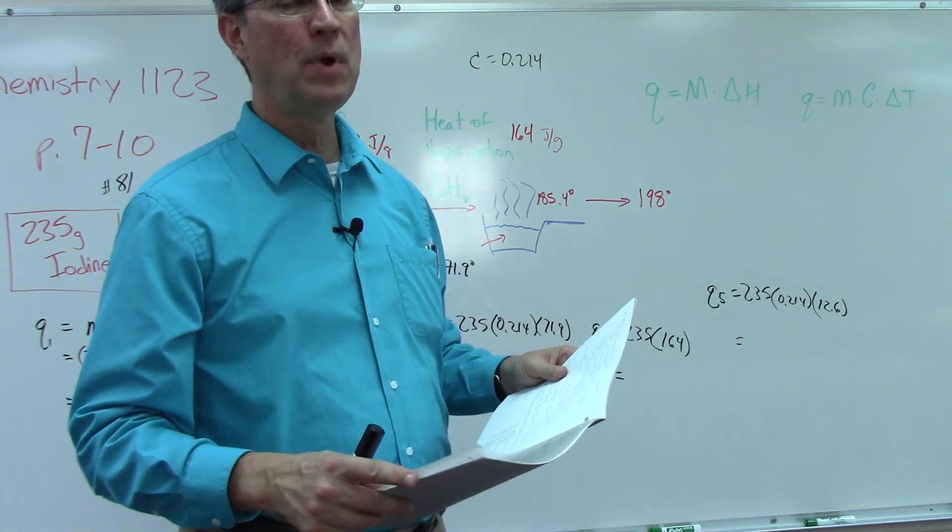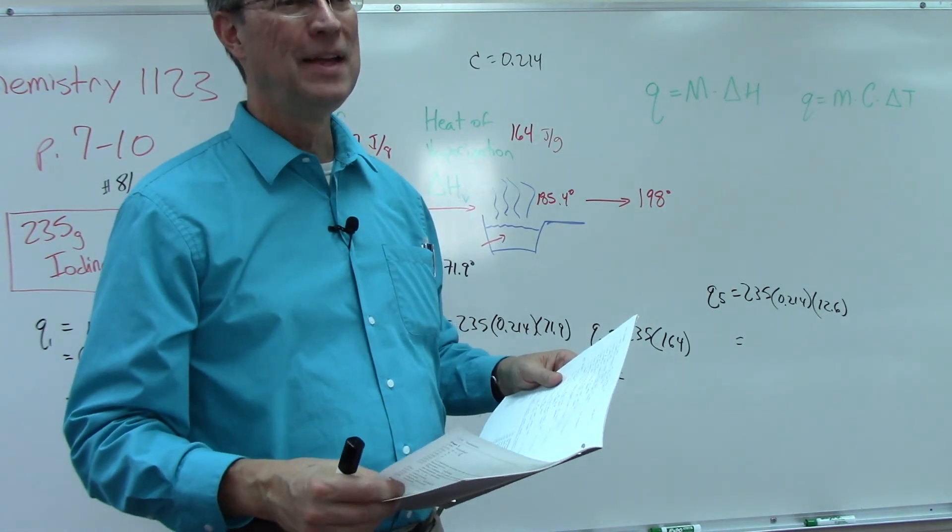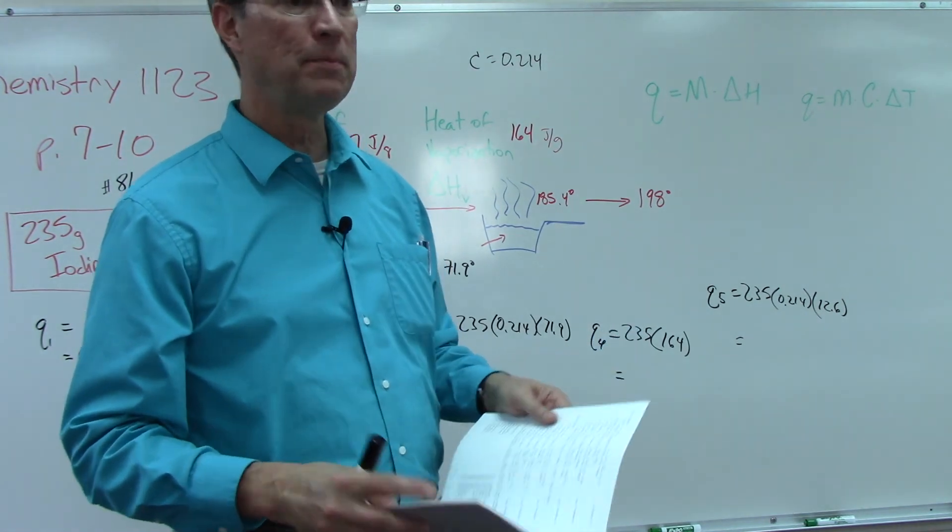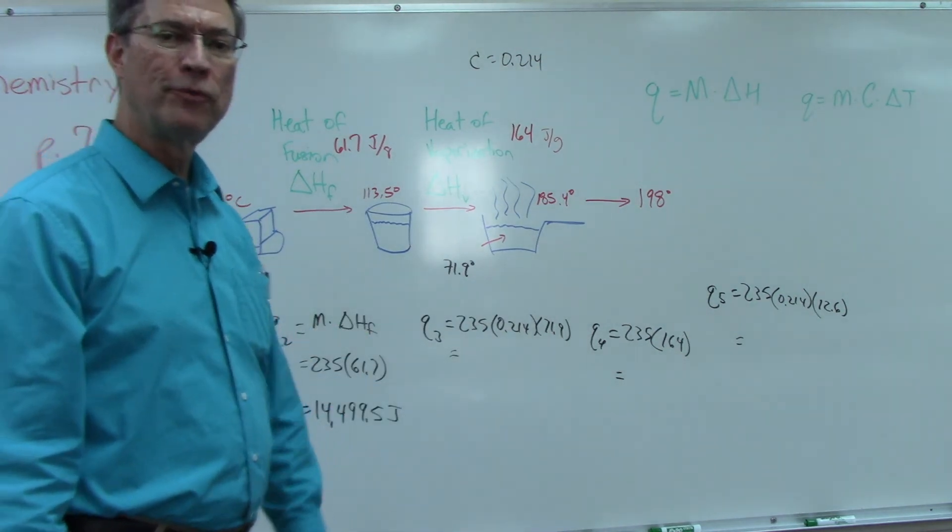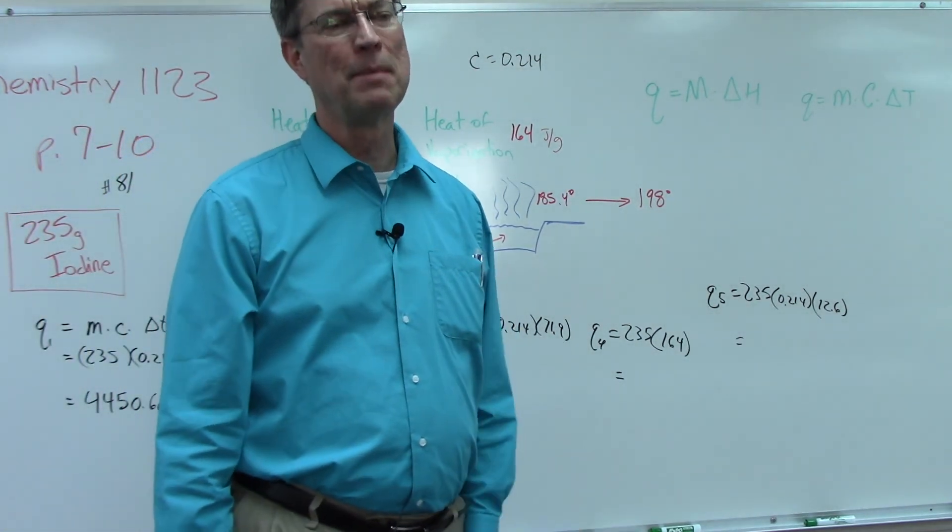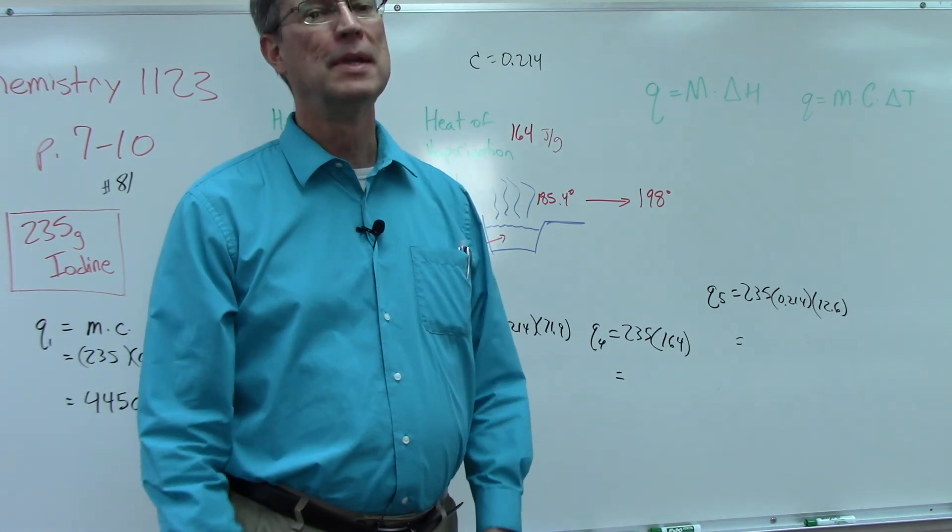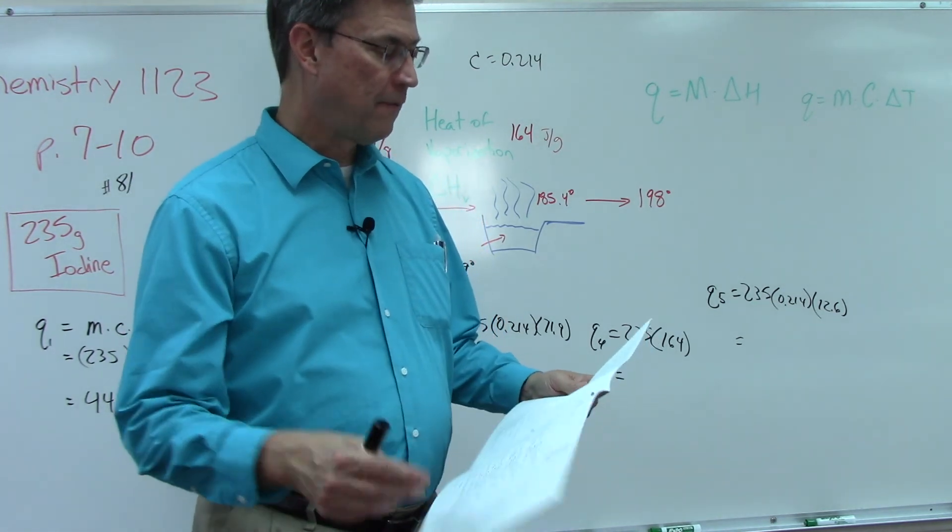But if you have the number right before that in the score key, good job, give yourself credit. Don't be too hard on yourself. You did the math right. It looks terrible when you put a big red X on the problem and say I failed, but if you got all these numbers right and added them and got the number right before the last one, don't worry about it. It's just the significant figures.